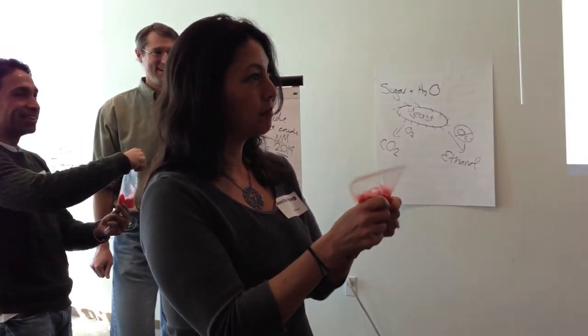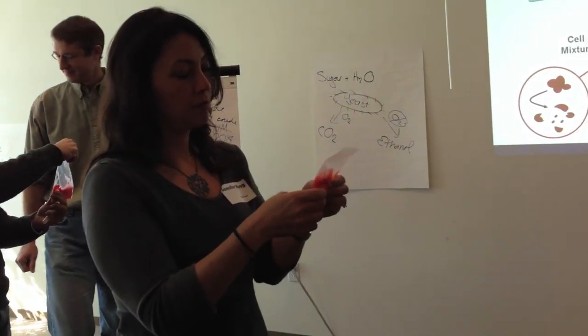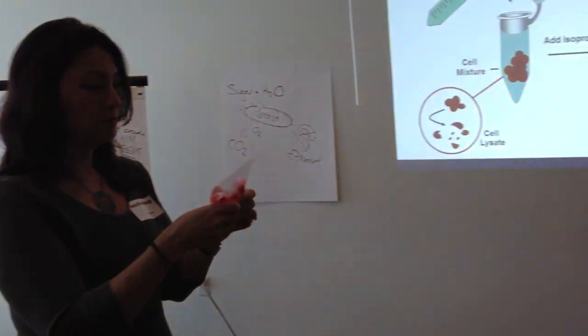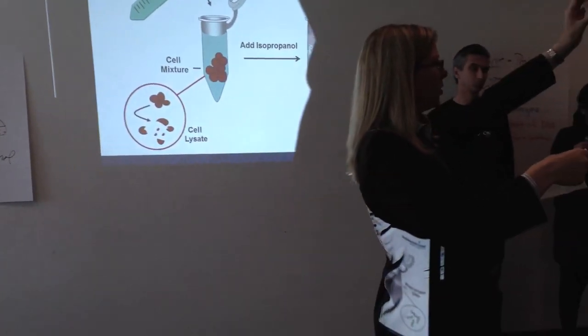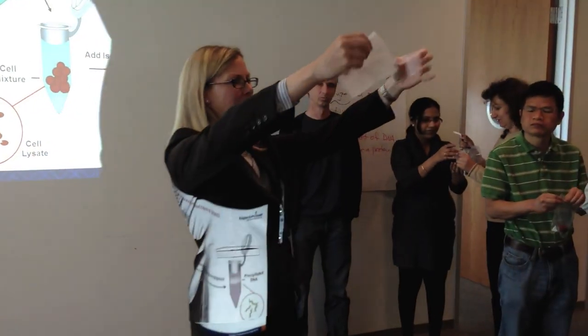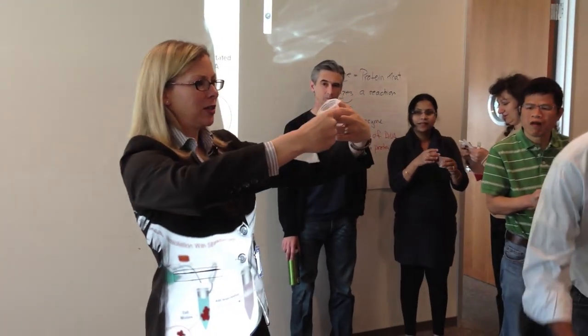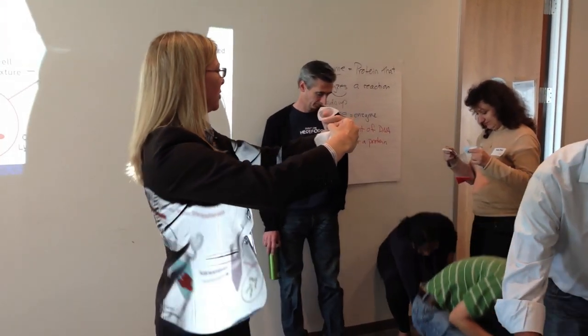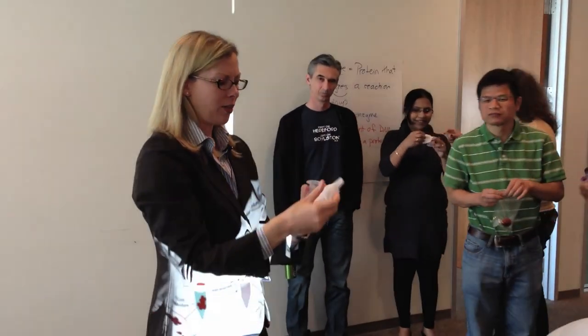While one partner is smashing, the other person can make our filtration device because we want to get rid of all of that fiber. So you have a beaker, some cheesecloth, and a rubber band. Are you starting to feel like MacGyver? Give me a rubber band, some cheesecloth, some dish soap, and I will go ahead and purify DNA from you.